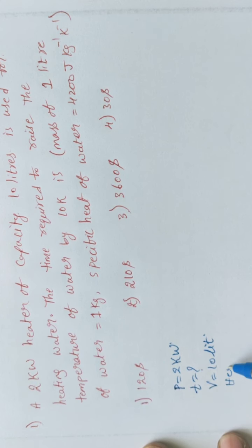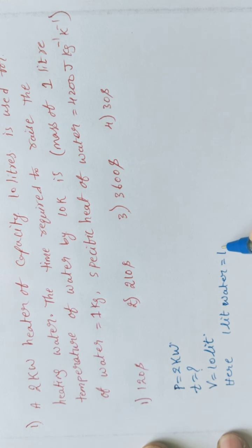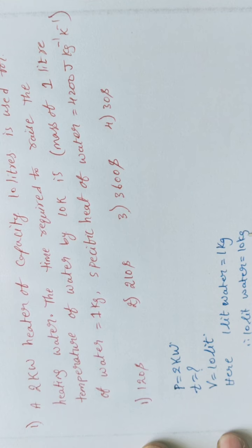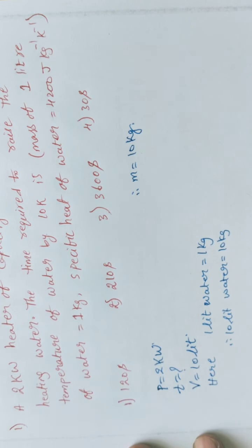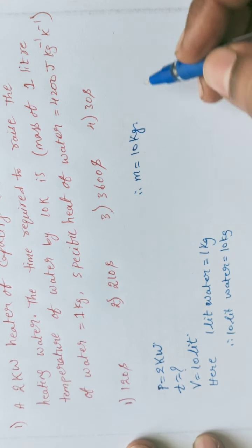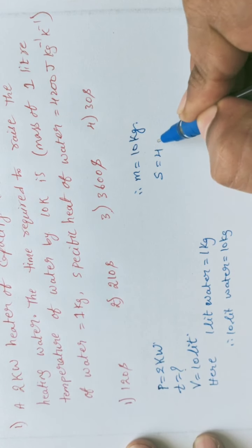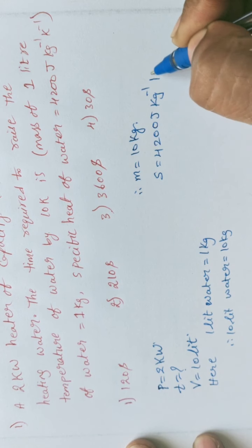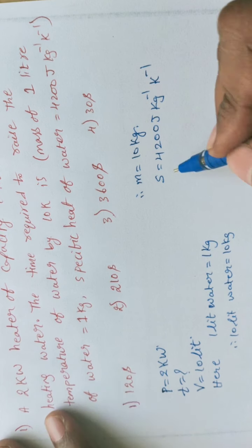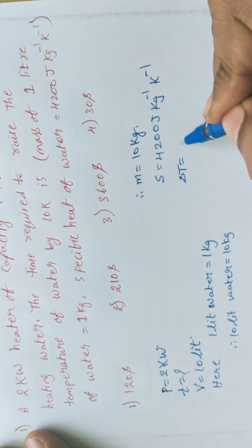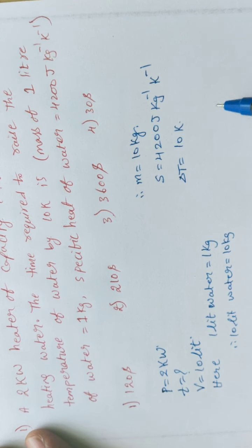Since one liter of water is 1 kg, 10 liters gives mass m equal to 10 kg. The specific heat of water s is equal to 4200 joule per kg per kelvin. The rise in temperature delta T is given as 10 K. We want to calculate time t.